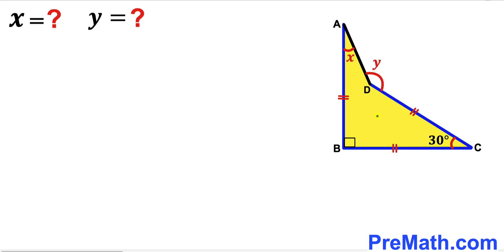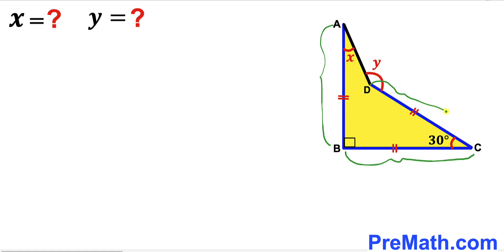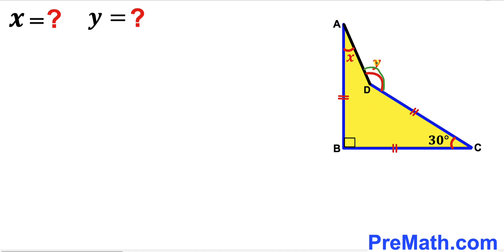Welcome to pre-math. In this video we have this yellow shaded quadrilateral ABCD such that side lengths AB, BC, and CD are equal to each other. Moreover, angle BCD is 30 degrees, whereas angle DAB is represented by X and angle ADC is represented by Y. Our task is to calculate the value of angle X and angle Y.